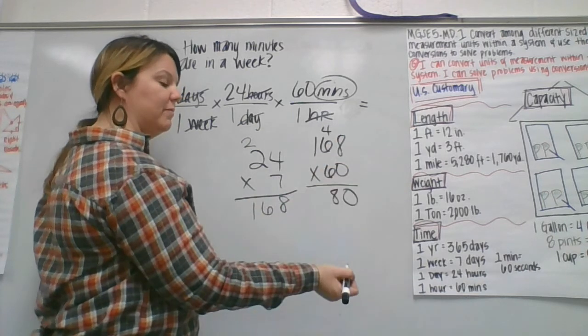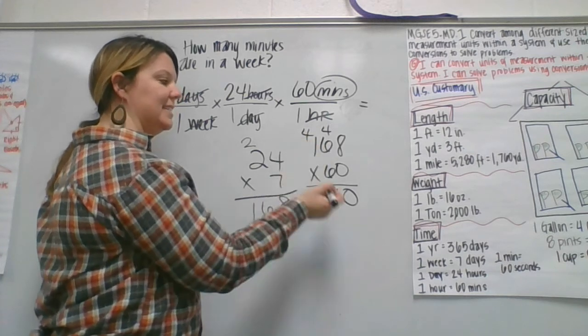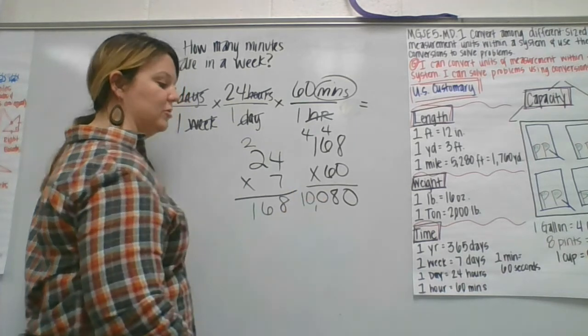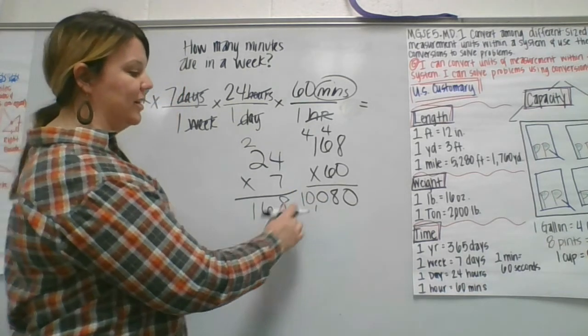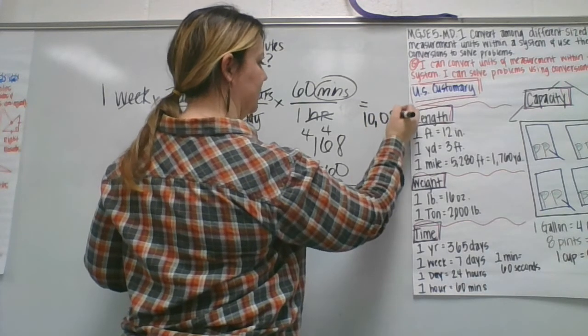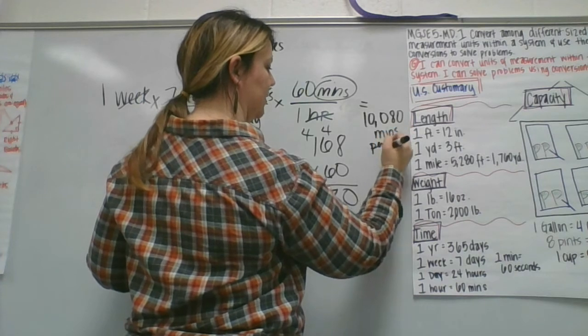Six times six is 20 or 36, plus four is 40. Six times one is six, plus four is 10. So that is the answer to my question. My final answer is 10,080 minutes per week.